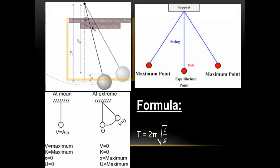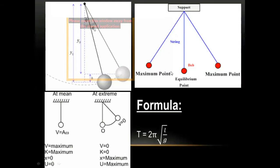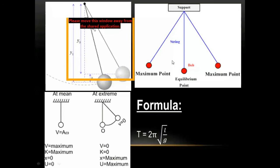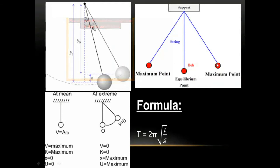The second characteristic of SHM: the velocity of the body is maximum at the mean position, and zero at the extreme position. When the bob reaches its maximum height (extreme position), it stops momentarily and then moves back toward the mean position with increasing velocity, reaching maximum velocity at the mean position. At the extreme point, velocity is zero, so kinetic energy is also zero.